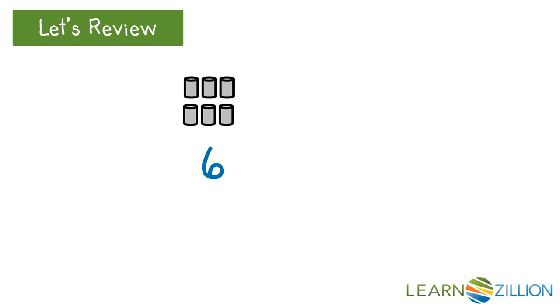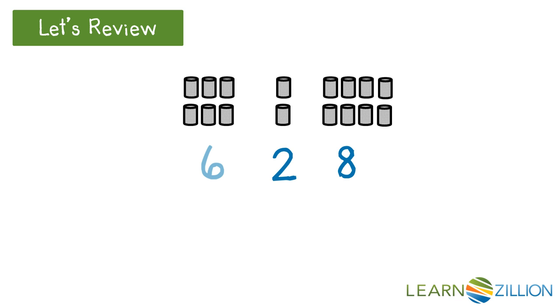Here are six cans. Two more cans are added. There are now eight cans altogether. The equation for these cans would be 6 plus 2 equals 8. The two numbers added together are called the add-ins. The number that is the total in the equation is called the sum.